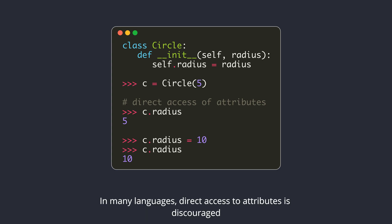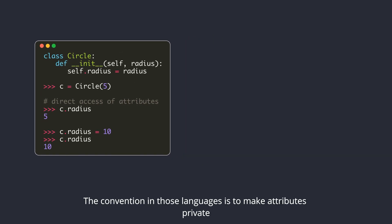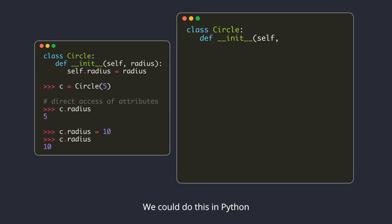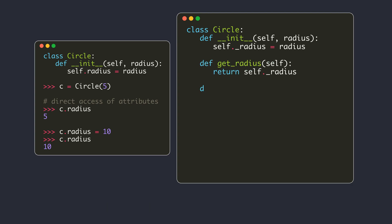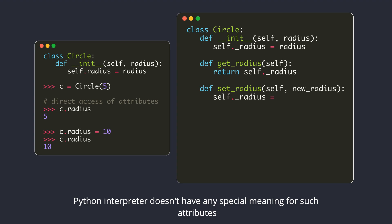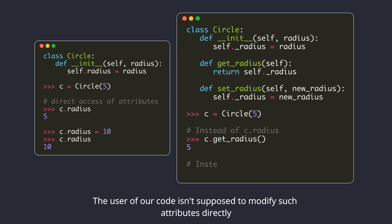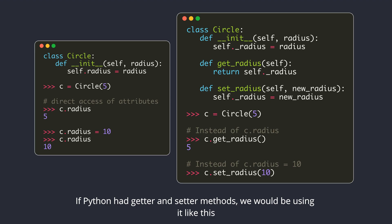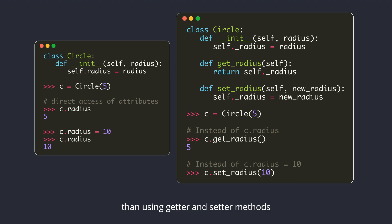In many languages, direct access to attributes is discouraged. The convention in those languages is to make attributes private and expose getter and setter methods for those attributes. We could do this in Python — we can prefix the attribute with an underscore. The Python interpreter doesn't have any special meaning for such attributes; it's just a convention. The user of our code isn't supposed to modify such attributes directly. As you can see, Python's way of directly accessing the attributes is much more convenient than using getter and setter methods.